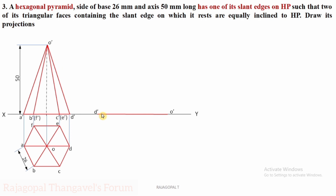After fixing the slant edge O'D' on HP, fix point A'. To fix A', take O' as center and O'A' as radius — measure that distance, keep your compass there, and draw an arc. Similarly, take D' as center and D'A' as radius, draw another arc. Both arcs will meet at one point — mark that as A'. Complete your triangle in the front view.